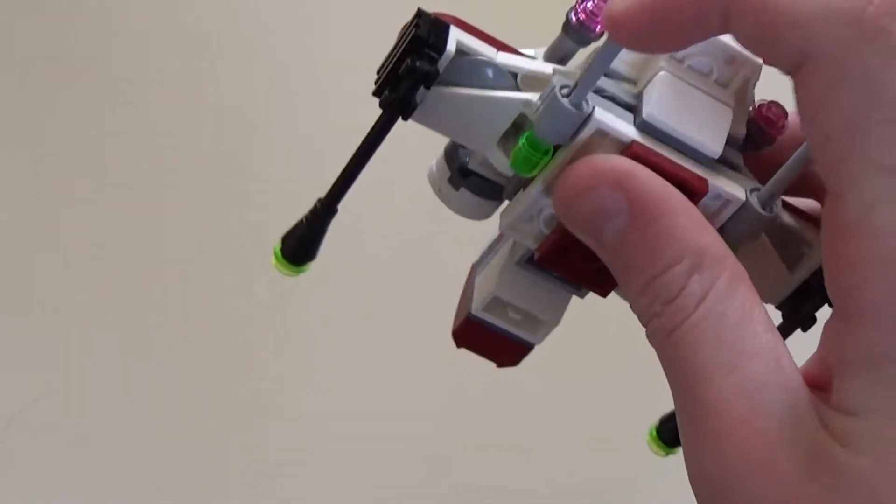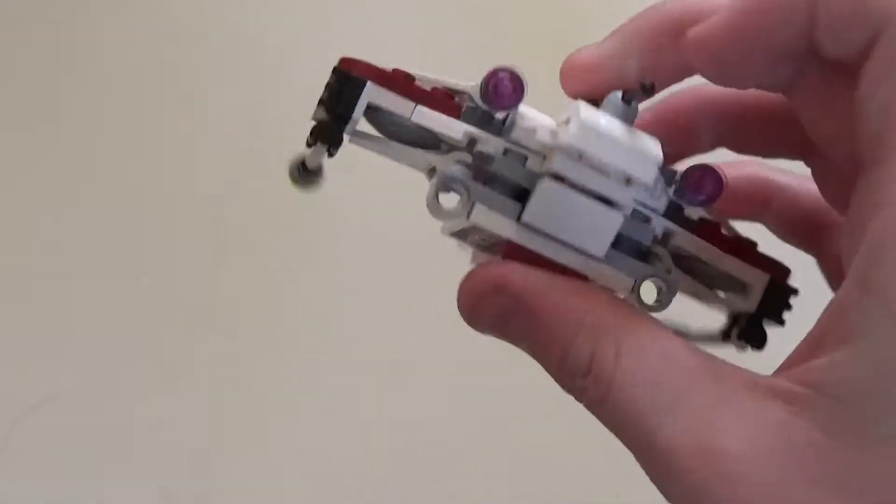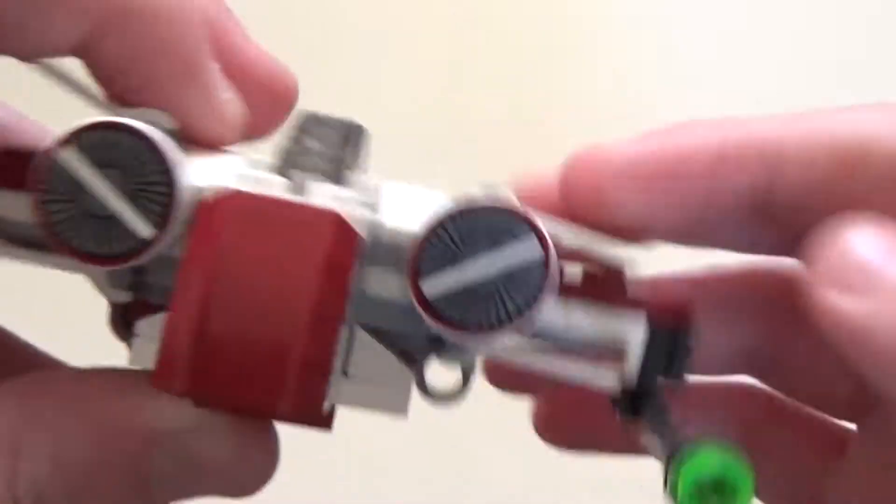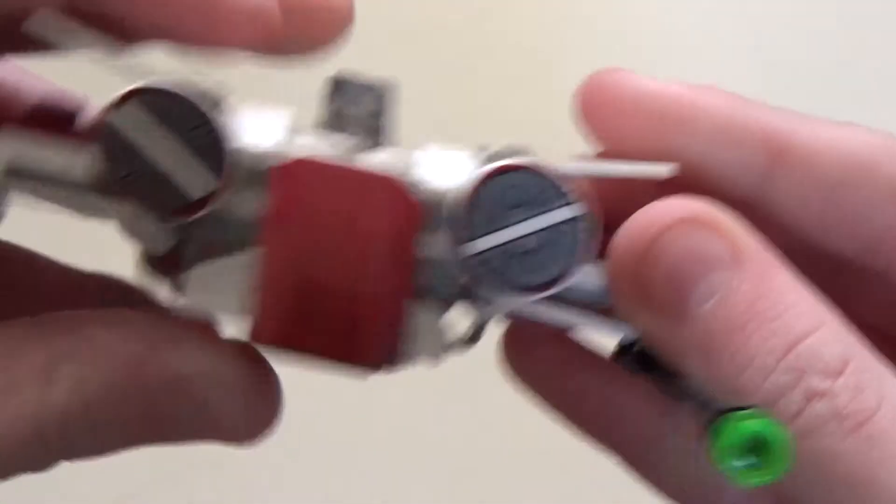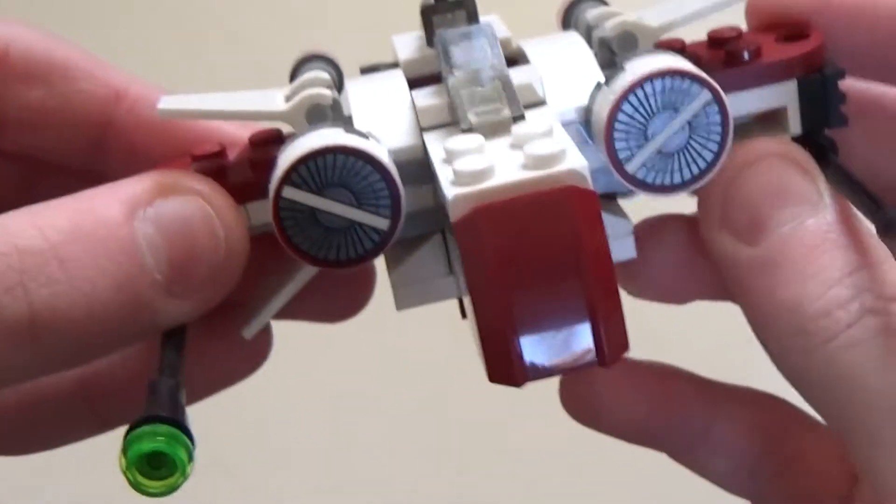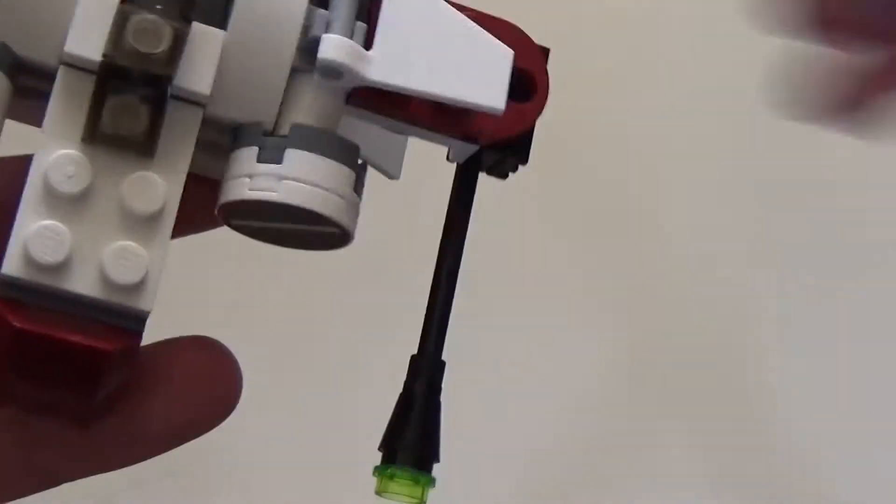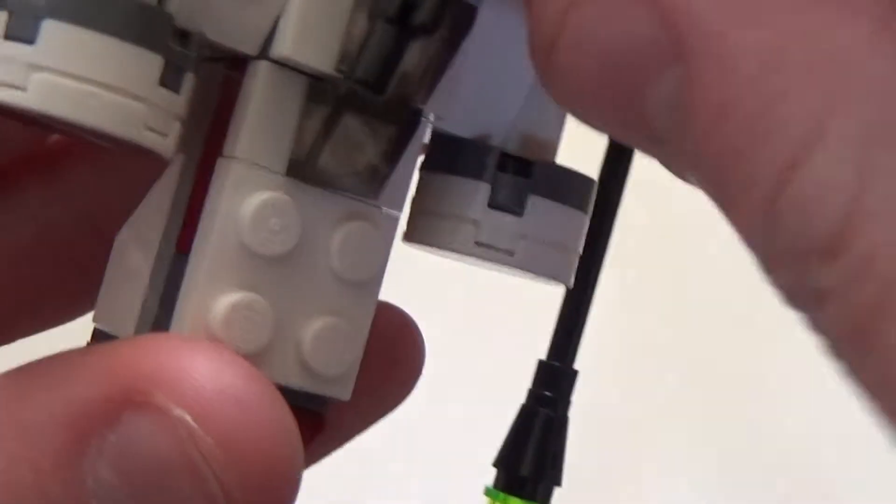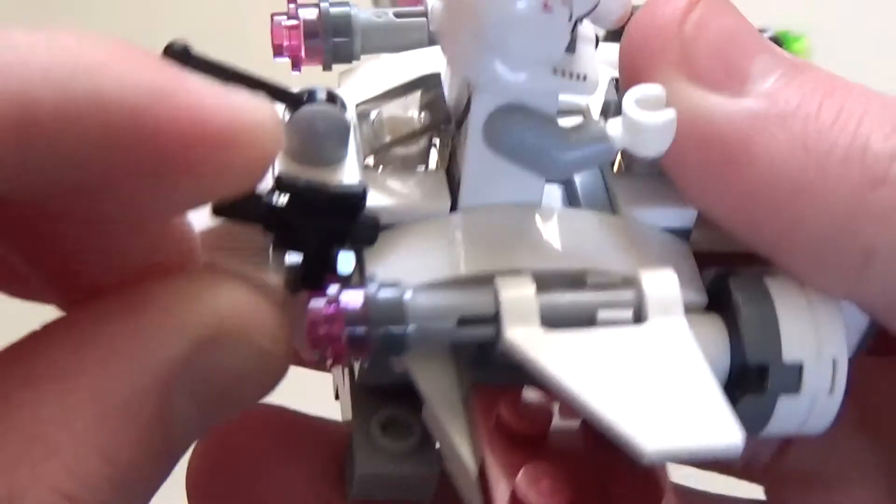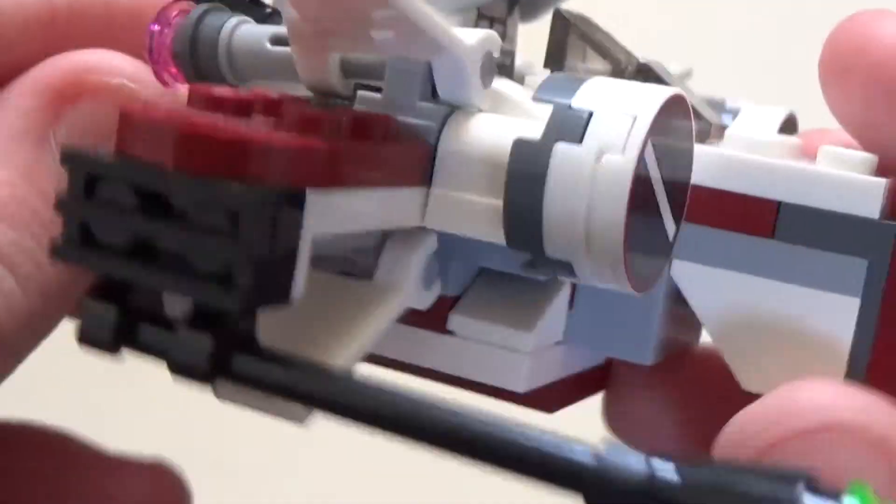So you can pretty much see the detail. The only real feature to this is the flick fire missiles. I don't like flicking them though. I just push them because it's sore to flick them. And these move up and down. So I guess you could put it like this. And then see the figure in it. There's also a slot for his weapon. So that's always good to have a slot for the weapon. So we'll take the weapon out and we will clip it in here.